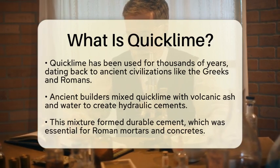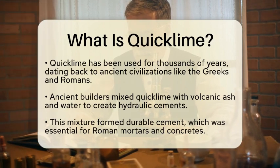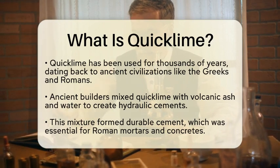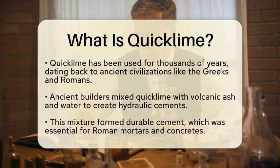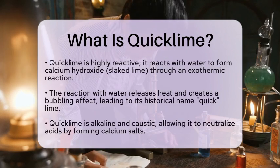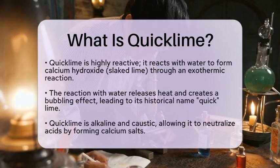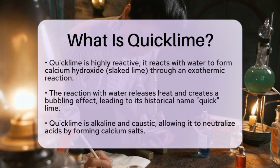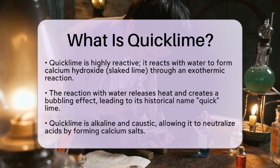Chemically, QuickLime is highly reactive. When it comes into contact with water, it undergoes an exothermic reaction to form calcium hydroxide, which is also known as slaked lime. This reaction releases heat and creates a bubbling effect. This is why QuickLime was historically referred to as quick, or living lime. The resulting slaked lime is important in construction, agriculture, and water treatment.